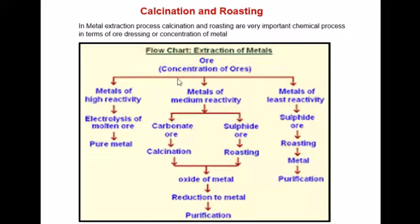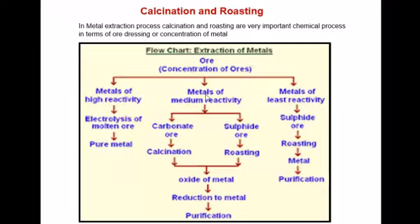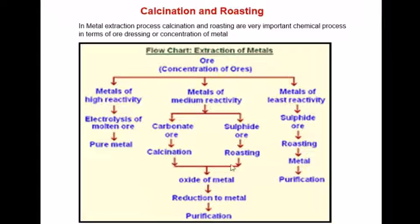Here you can see the concentration of ore flowchart. The metals which have high reactivity can be concentrated by electrolysis of molten ore. The metals which have medium reactivity — their concentration can be done by calcination or roasting process. Today we learn about these two processes: calcination and roasting.